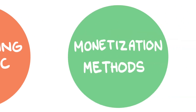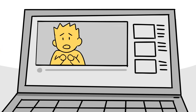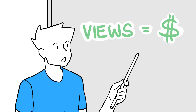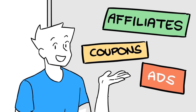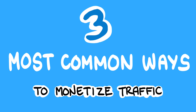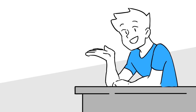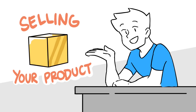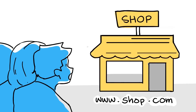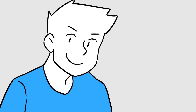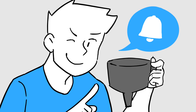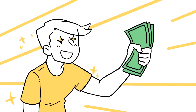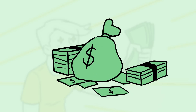Finally, we have monetization methods. Traffic is useless in the long run without some way of converting those views into profit. There are literally dozens of ways to do this, so today I'm going to tell you about the three most common. First, we have selling your own product or service. This is when you send people to your e-commerce store, your website, or if you're really looking to make money, what's called a funnel — which we'll definitely talk about in another video. Once they're on that page, they are convinced to purchase your product or service, and you make money.